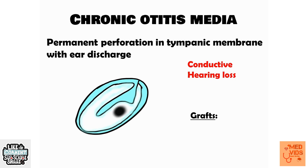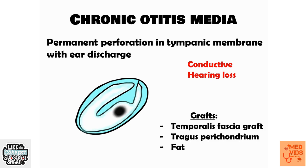To correct the perforation of the tympanic membrane, various grafts can be used, such as temporalis fascia graft, tragus perichondrium, and fat. The most commonly used graft for correcting the perforation of the tympanic membrane is the temporalis fascia graft — you need to remember that.